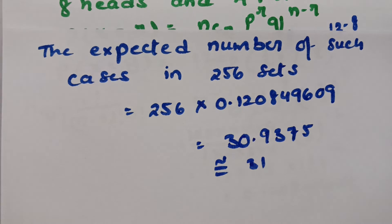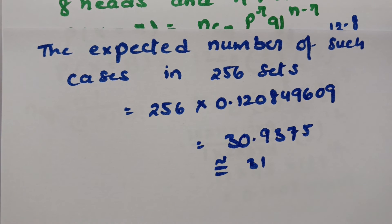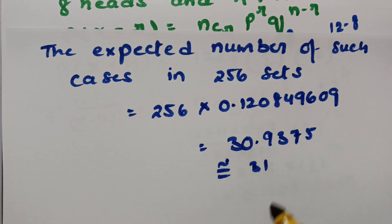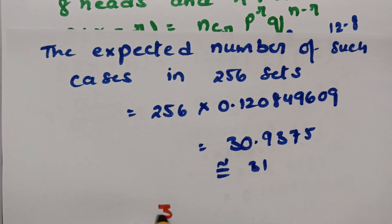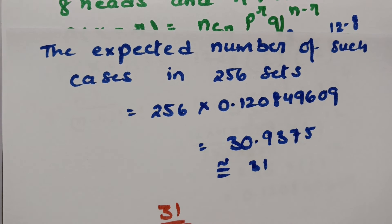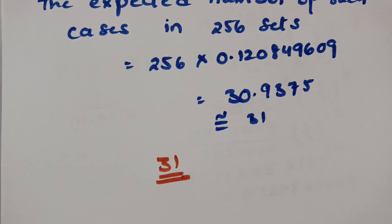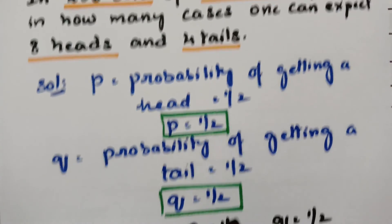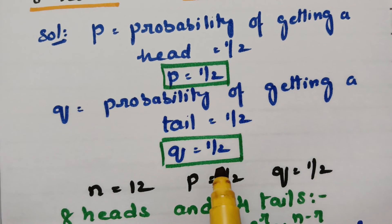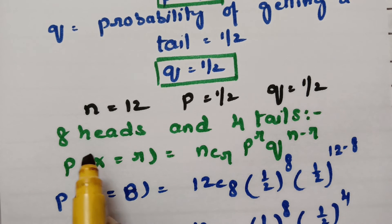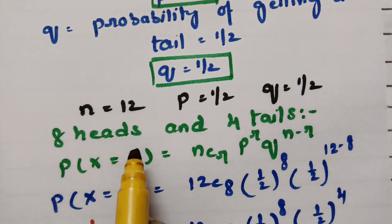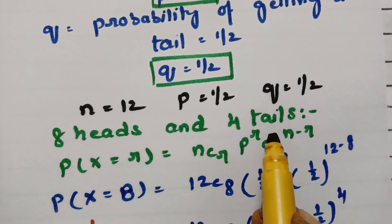Multiplying 256 by 0.120849609, the value is 30.9375, which is approximately equal to 31. Therefore, the expected number of such cases in 256 sets is 31. The probability of getting a head is half, the probability of getting a tail is half, and we had to find how many cases one can expect 8 heads and 4 tails.